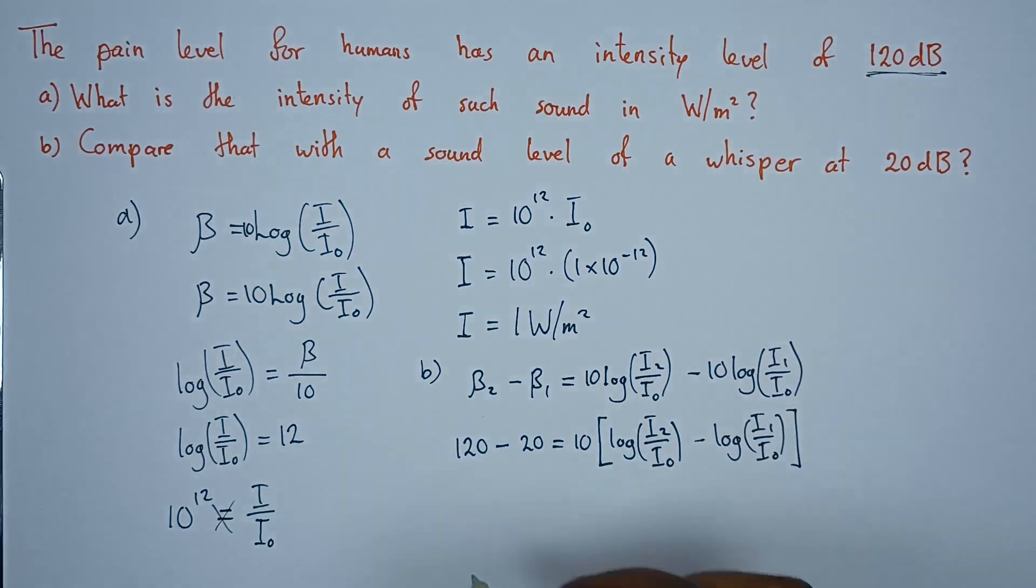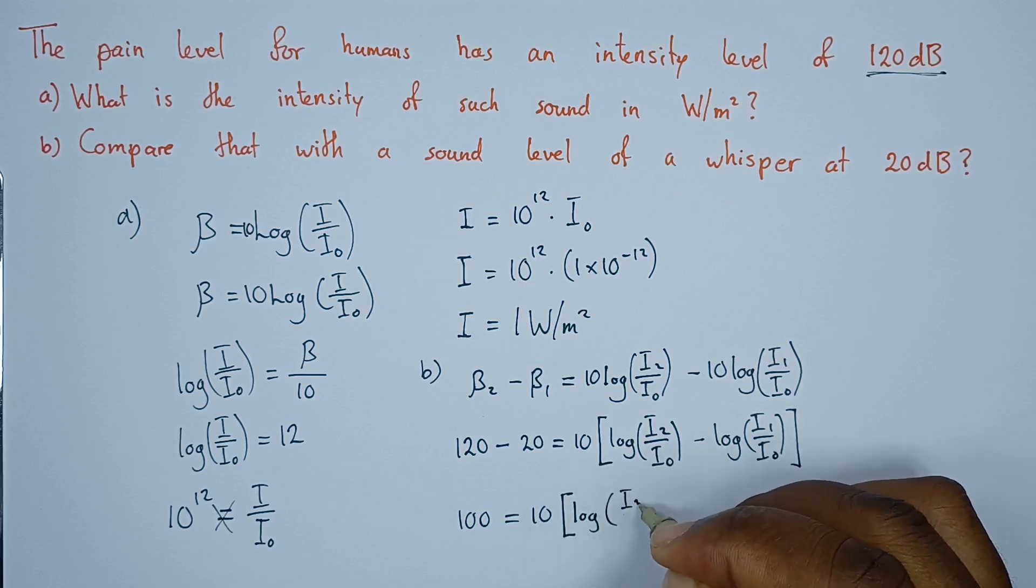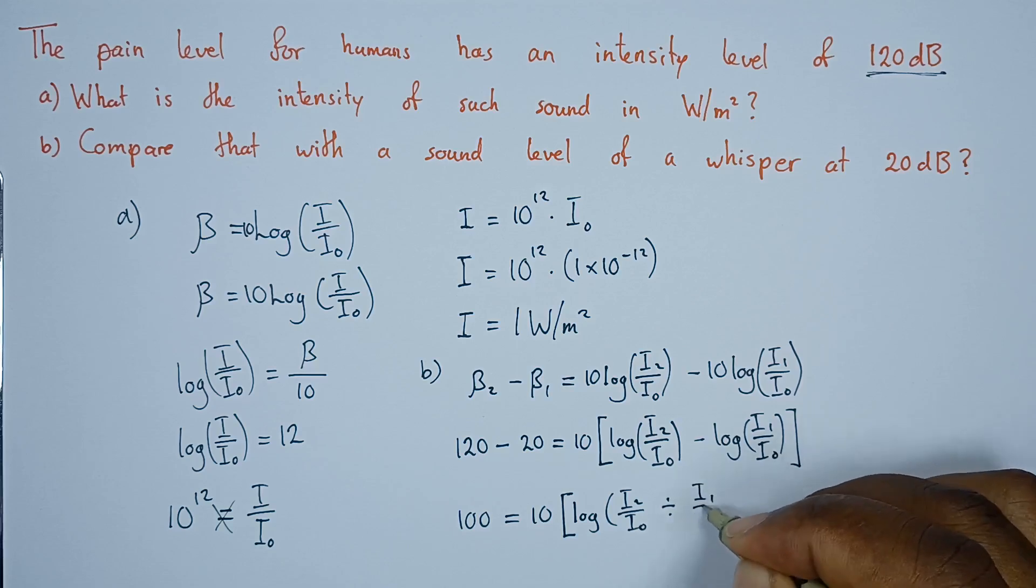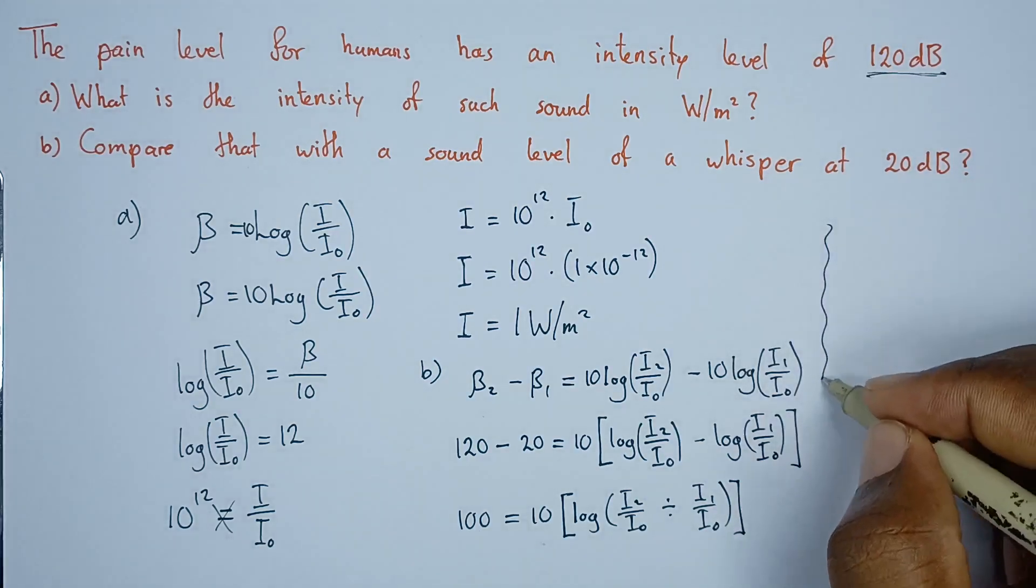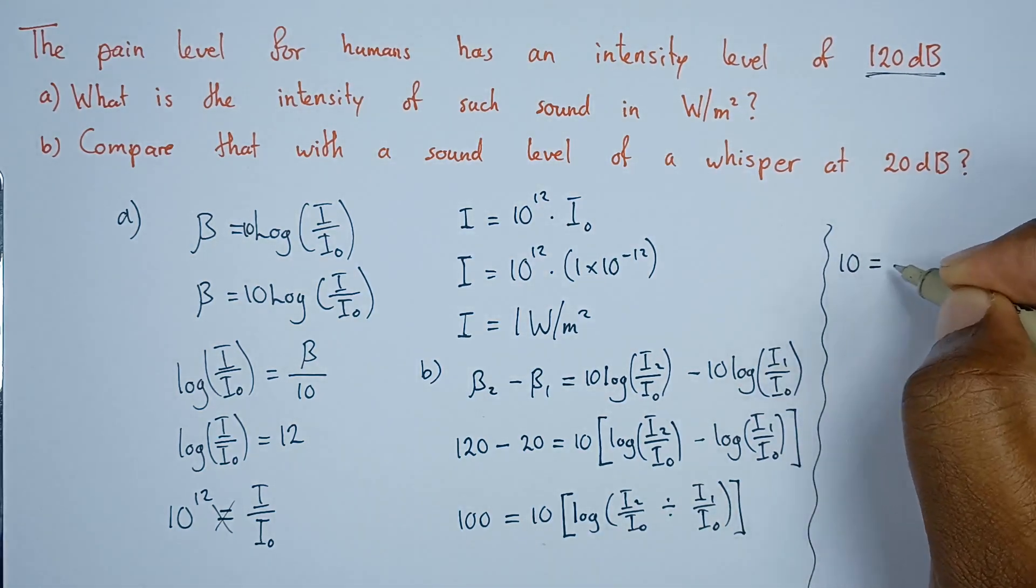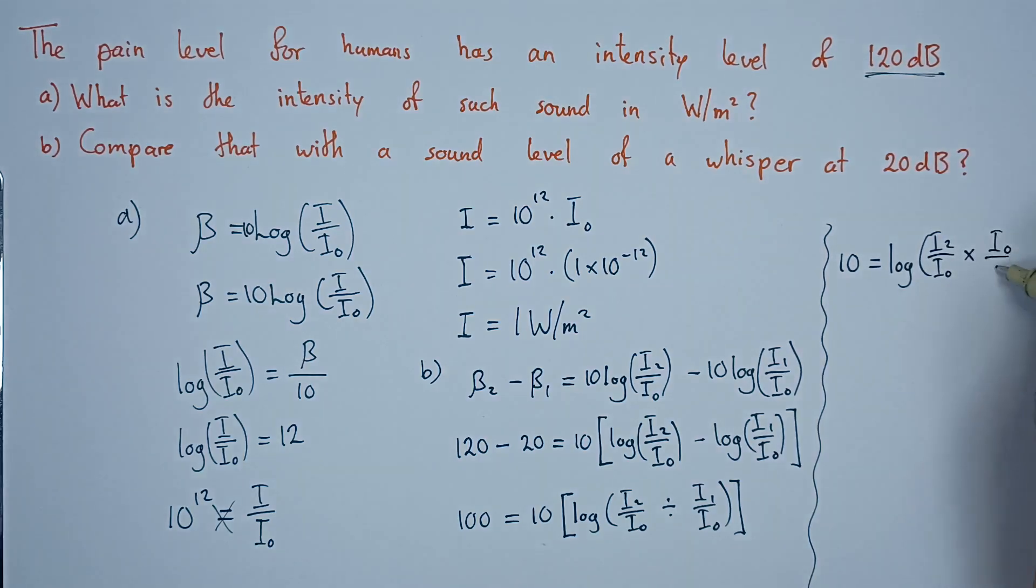Our next step will be, on this side we have 100. So 100 equals, here we have a 10. Then let's divide the arguments. That is log I2 over I naught divided by I1 over I naught. We can divide both sides by 10. This is equals to the logarithm of I2 over I naught multiplied by I naught over I1.